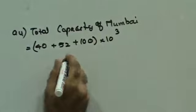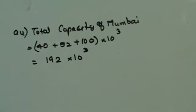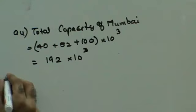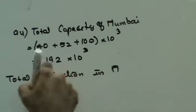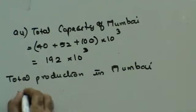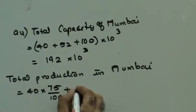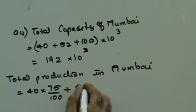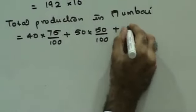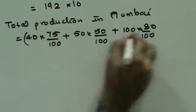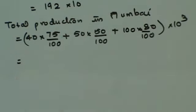In Mumbai they are producing 40,000 shoes plus 52,000 upper shoes and we are also producing 100,000 sandals. This is the thousand I am writing outside. So in all we are producing 192,000. That's my total capacity. Now they are saying that total production in Mumbai. This is the total capacity that Mumbai can produce. But instead of producing the whole thing we are producing only 75% of shoes, we are producing only 50% of uppers, and we are producing only 80% of sandals.